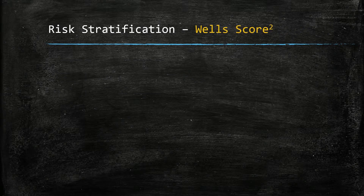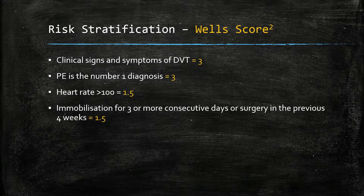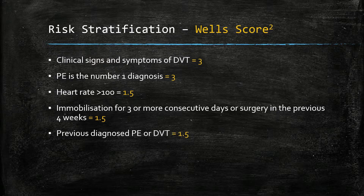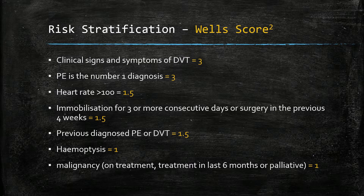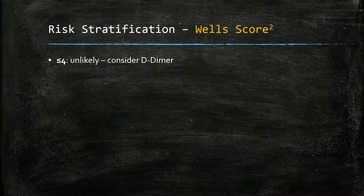Another scoring system is the Wells score. Signs and symptoms of DVT such as calf tenderness scores 3 points. If pulmonary embolism is the number one differential based on symptoms, 3 is scored. Heart rate above 100 gives 1.5. Immobilisation for 3 or more continuous days, or surgery in the previous 4 weeks, scores 1.5. Previously diagnosed PE or DVT gives 1.5. Haemoptysis scores 1 and malignancy 1. With the Wells score, a score under 4 makes PE unlikely and we would run a D-dimer; above 4 is likely and we would carry out a CTPA.